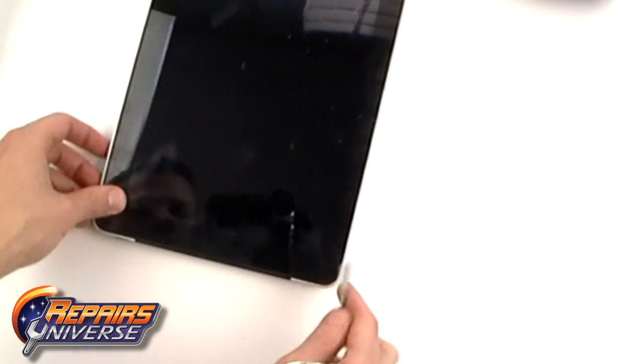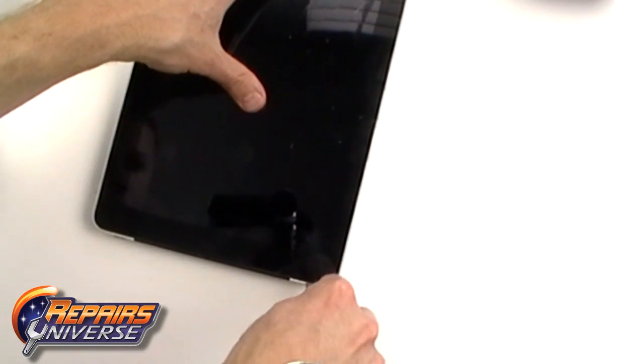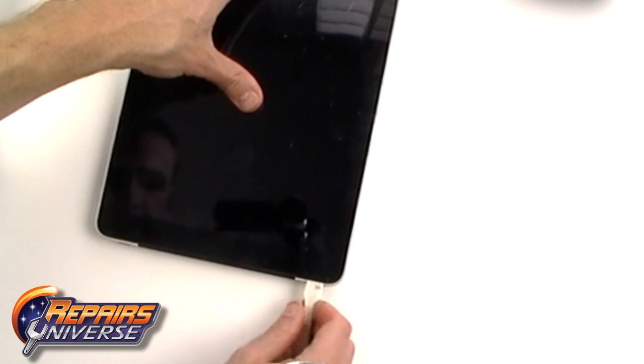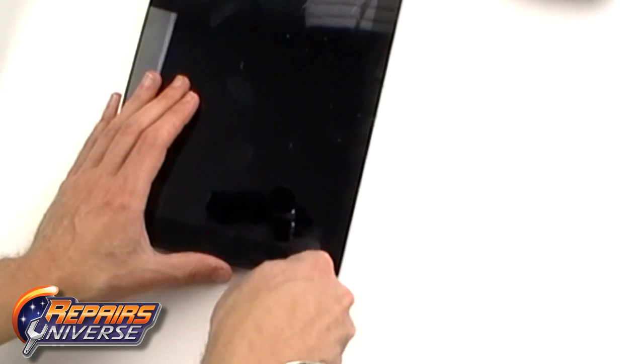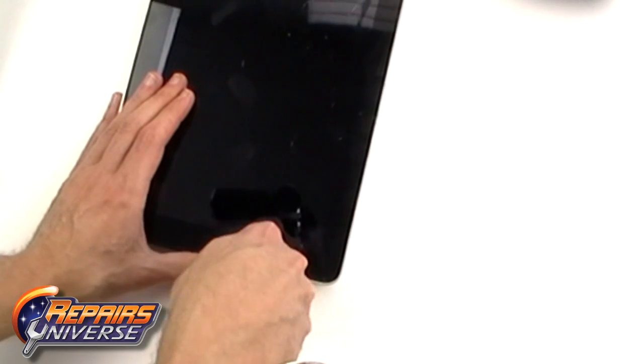The first thing you need to do is using our iPad Pry tool available at RepairsUniverse.com, start prying between the glass and the metal frame to release the metal clips.